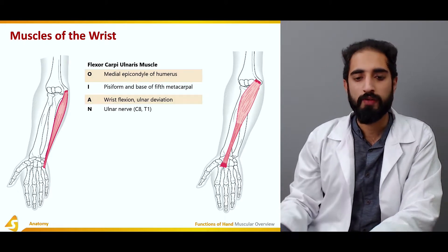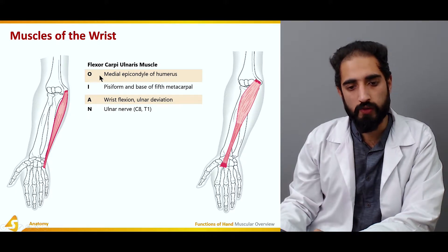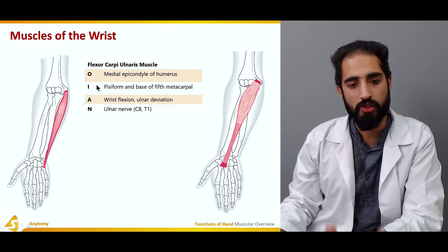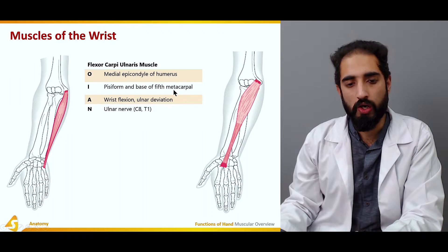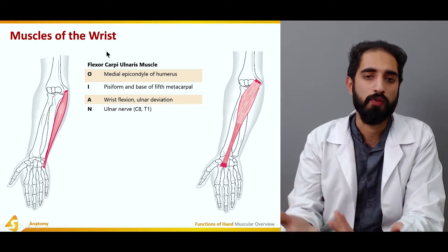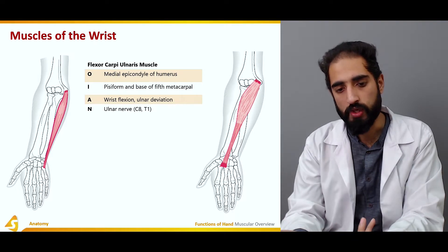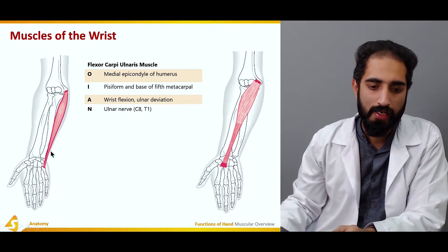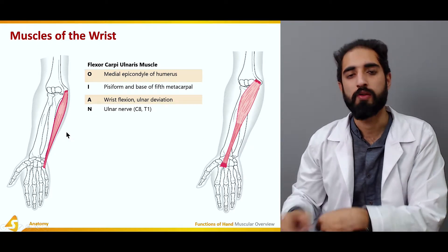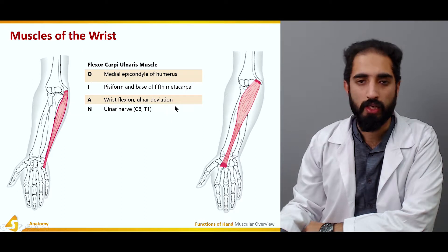The flexor carpi ulnaris originates from the medial epicondyle of the humerus and inserts at the pisiform bone and the base of the fifth metacarpal. Being on the ventral aspect, its primary action is wrist flexion. Because it is positioned on the medial side, contraction also results in ulnar deviation. It is supplied by the ulnar nerve.